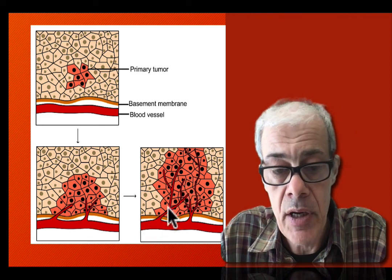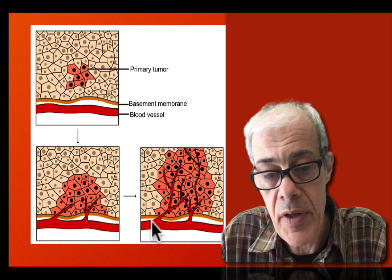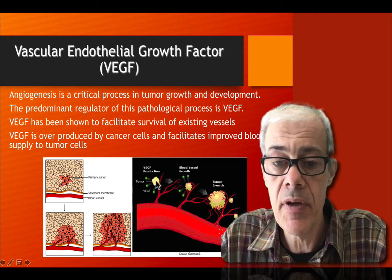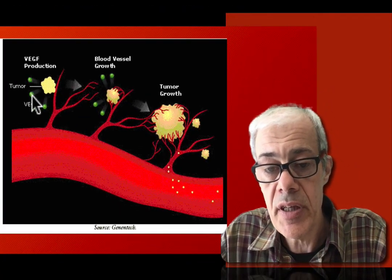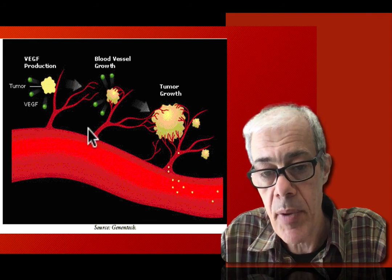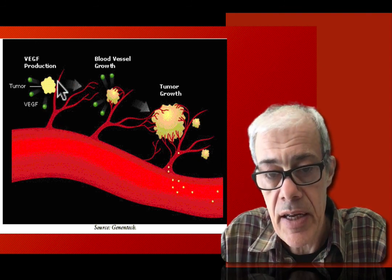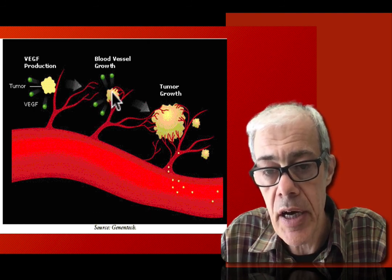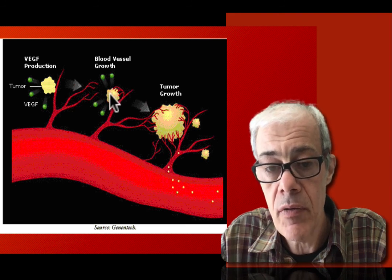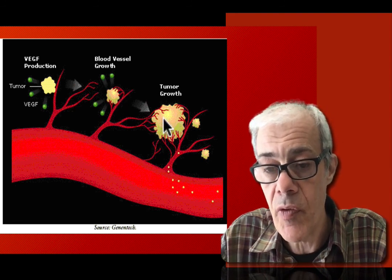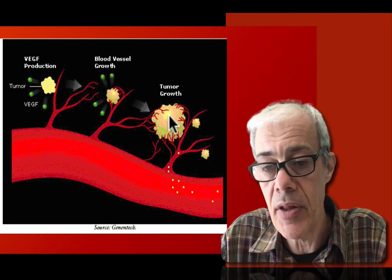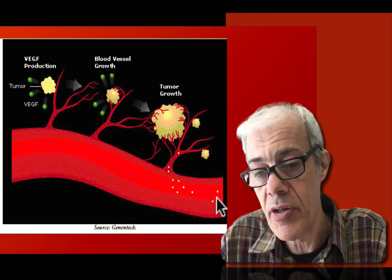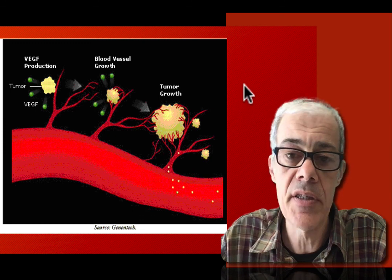A small tumor produces VEGF, which is picked up by the blood vessel. This directs fine capillaries to grow toward the source of the VEGF — the tumor cells — providing blood supply, allowing the tumor to grow at a higher rate and to metastasize further, spreading to other parts of the body. It is a vicious cycle.